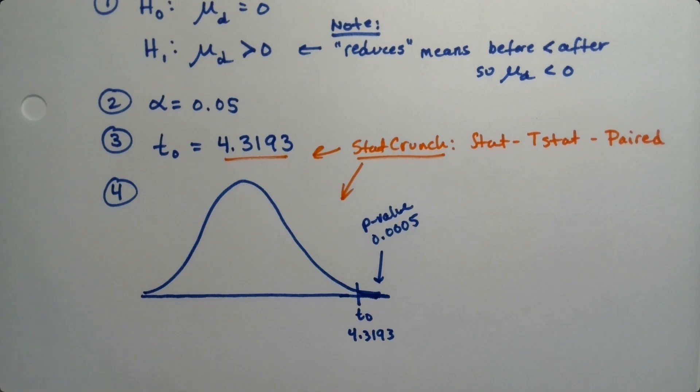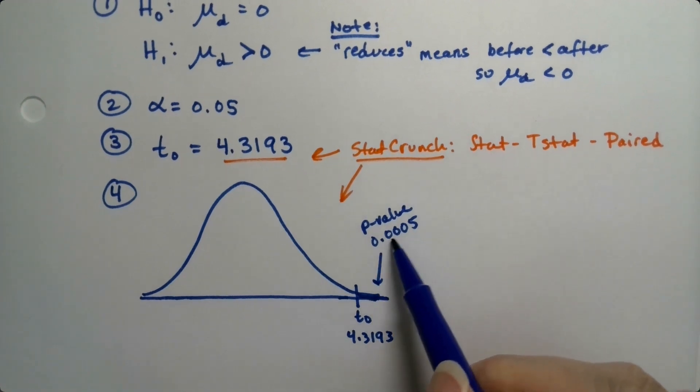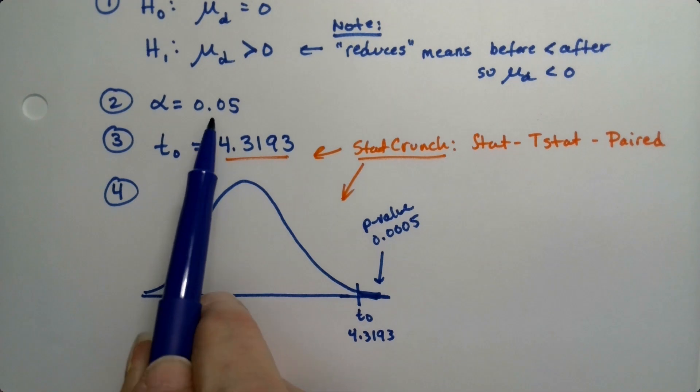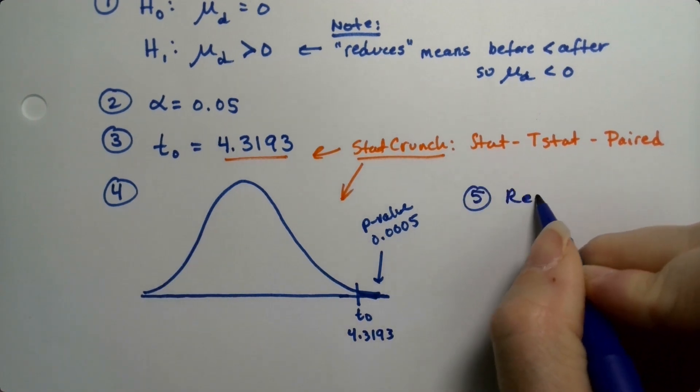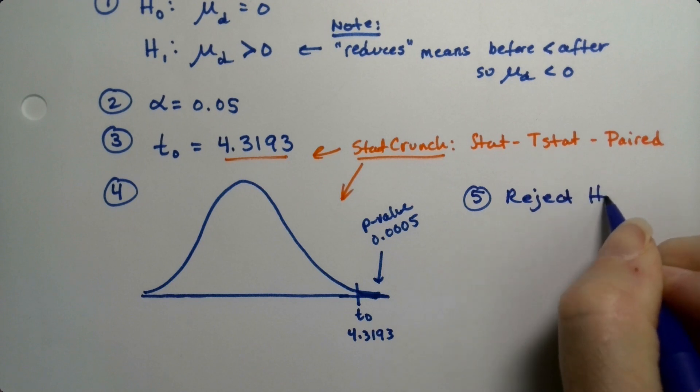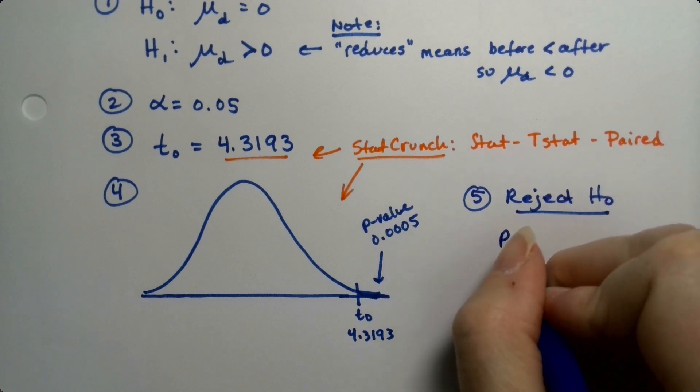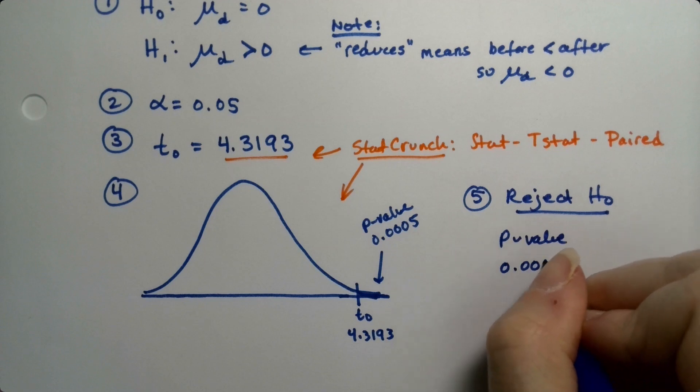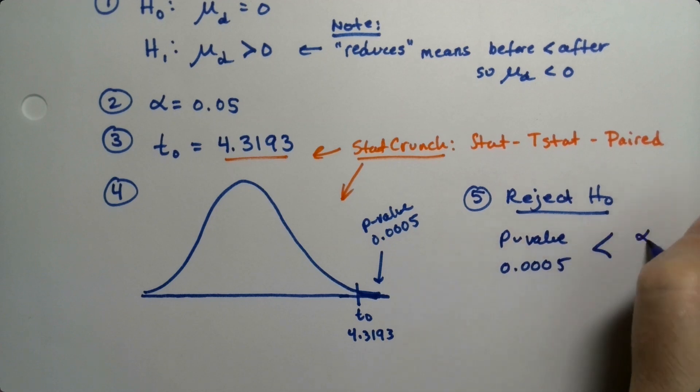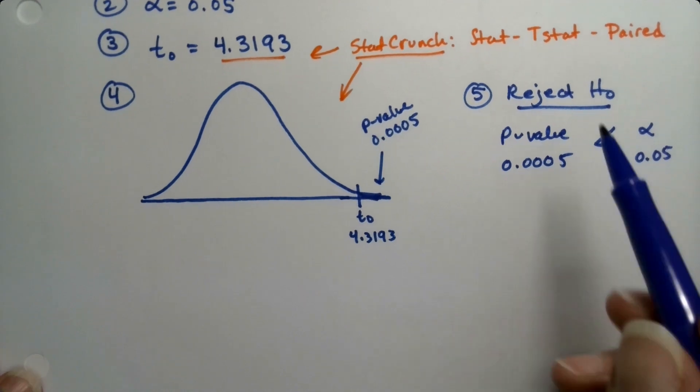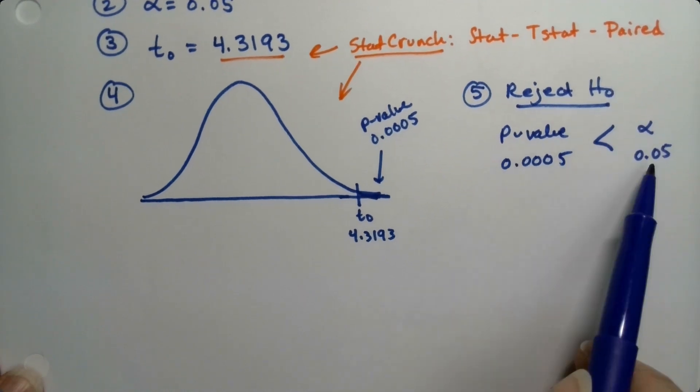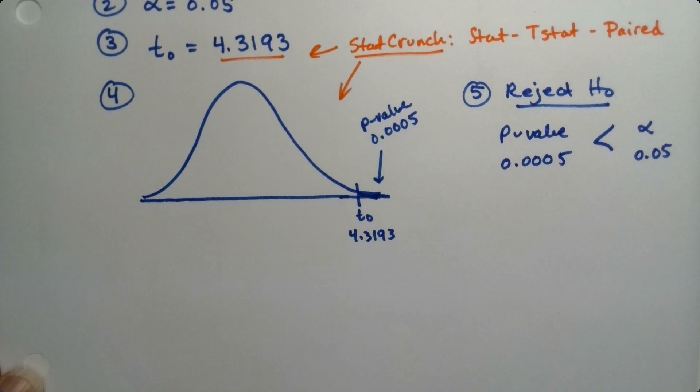All right, now we have to make a decision. Well that p-value has three zeros in it. That is definitely lower than that alpha. So step five, we are going to reject H0, our null hypothesis, because the p-value which is 0.0005 is less than our alpha which was only 0.05. Right, when your p-value is low, lower than your alpha, you reject your null hypothesis.